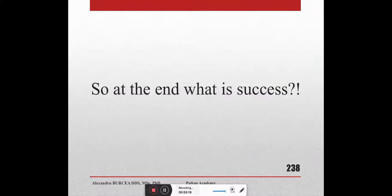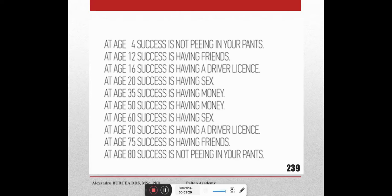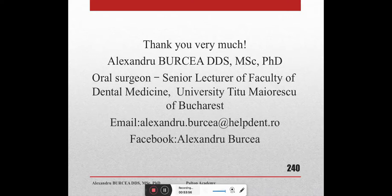At the end — what is success? A small joke: success at age 4 is not wetting your pants; at 12 is having friends; at 16 is having a driver's license; at 20 is having sex; at 35 is having money; at 50 is having money; at 60 is having sex; at 70 is having a driver's license; at 75 is having friends; and at 80, success is again not wetting your pants. Thank you very much for this webinar and for this opportunity — all the best.